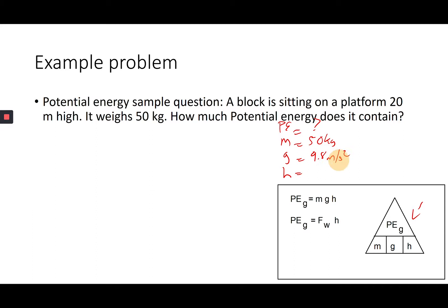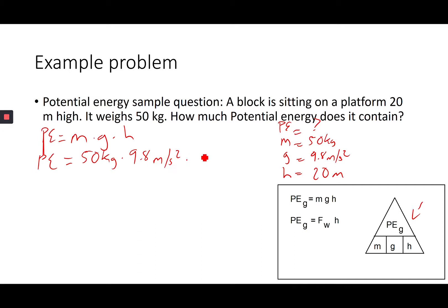Write out the equation: potential energy equals mass times gravity times height. That's my formula — always write the formula to stay organized. So potential energy equals 50 kilograms times 9.8 meters per second squared times 20 meters. 50 times 9.8 times 20 gives us 9,800 joules, because joule is the unit of energy. Circle the answer — done. That's showing my work and how I set it up.